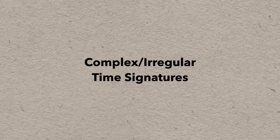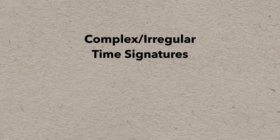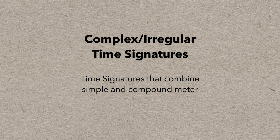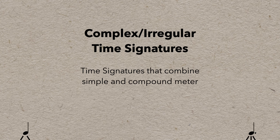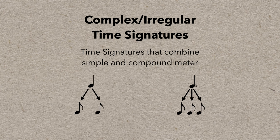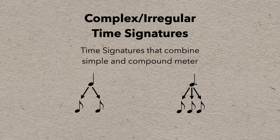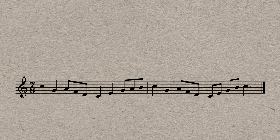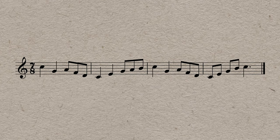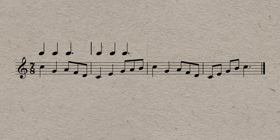Complex or irregular time signatures follow all the rules we've seen before, but combine simple and compound meter, which just means that you have short beats that divide into two, and long beats that divide into three. But the eighth note is always the same. An example might be 7-8. It's just seven eighth notes in a bar, which are commonly grouped in a pattern of 2-2-3, two short beats and a long beat.